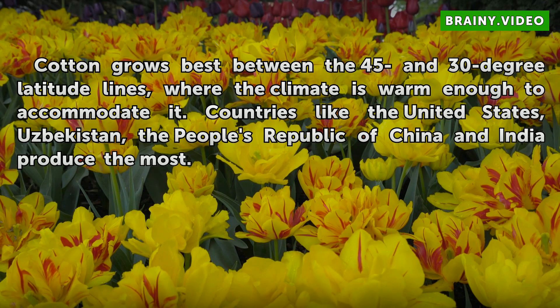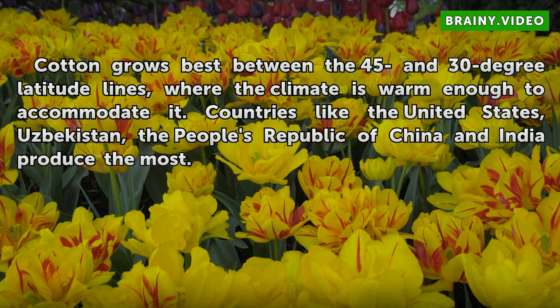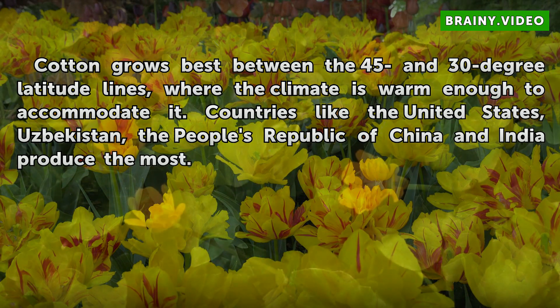Cotton grows best between the 45 and 30 degree latitude lines, where the climate is warm enough to accommodate it. Countries like the United States, Uzbekistan, the People's Republic of China and India produce the most.